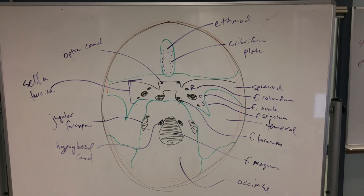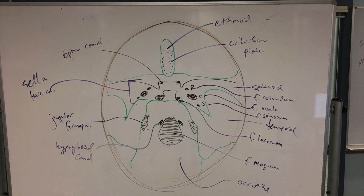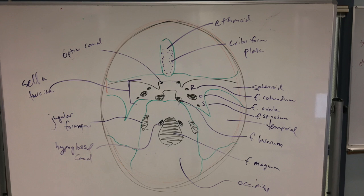Then this big bone down here that kind of looks like an upside-down bat — that's your sphenoid bone. You can tell these bones are actually pretty big. You can see part of the sphenoid on the inside of the orbit and also on the lateral side of the skull. The sphenoid is a really substantial bone that occupies a lot of the internal structure of the skull. This bone on the lateral side is your temporal bone.